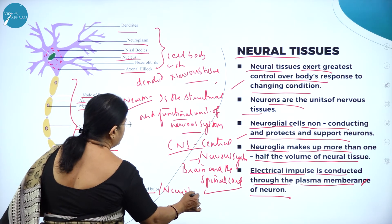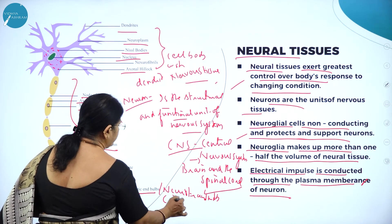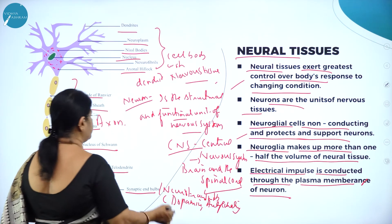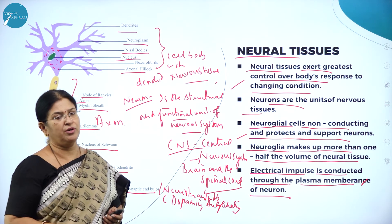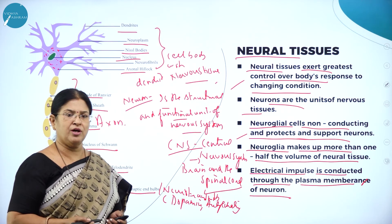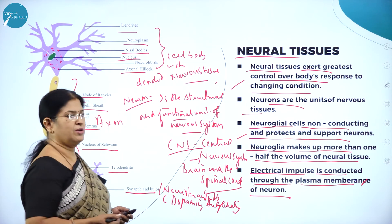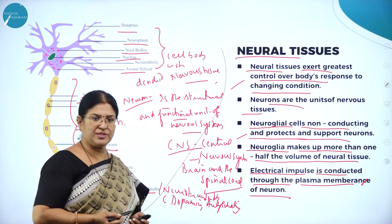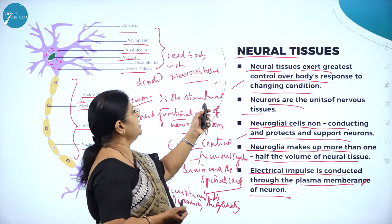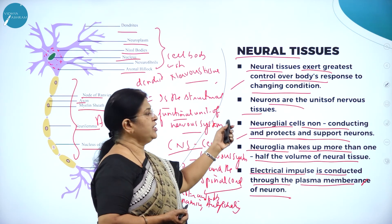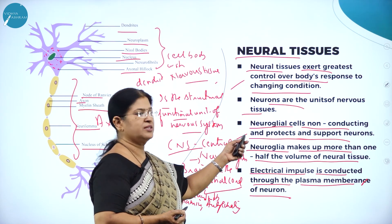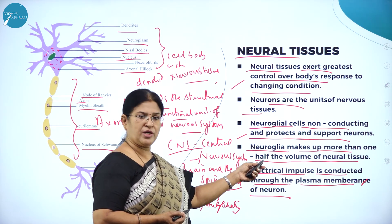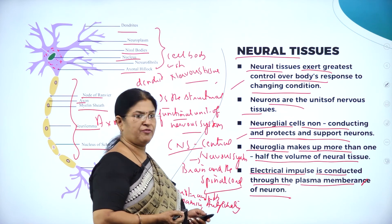The synaptic end bulbs contain neurotransmitters like dopamine and acetylcholine, which are very important for conduction of nerve impulses. Organisms exhibit a very important property called consciousness — that is, response to external stimuli — and it is all because of nervous tissue. Neural tissues exert the greatest control over the body's response to changes in condition. Neurons are the units of nervous tissue, neuroglial cells are non-conducting and protect neurons, neuroglia makes up more than half the volume of neural tissue, and electrical impulse is conducted through the plasma membrane of a neuron.